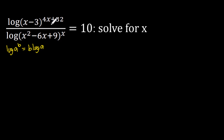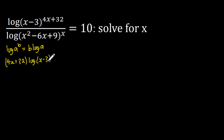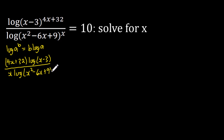Applying this property, we rewrite the fraction. This gives us (4x + 32) times log of (x - 3), all divided by x times log of (x² - 6x + 9), equal to 10.